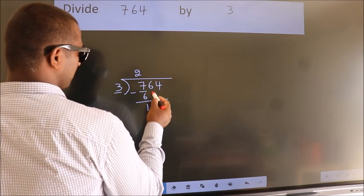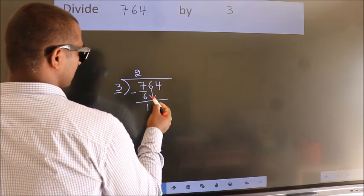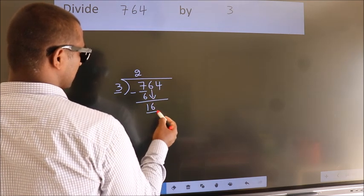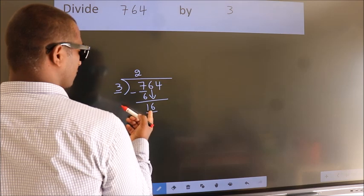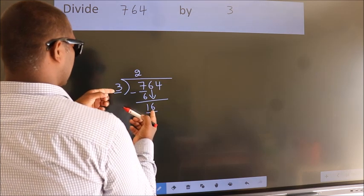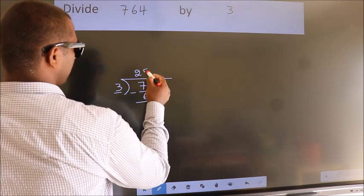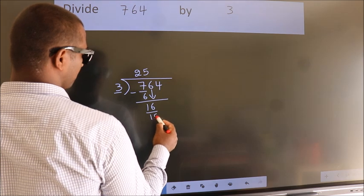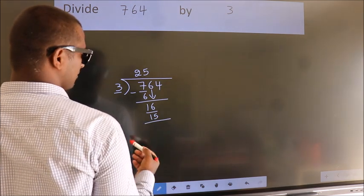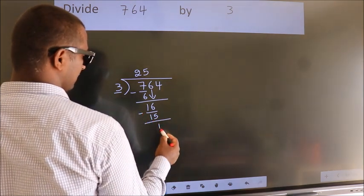After this, bring down the beside number. So 6 down. So 16. A number close to 16 in 3 table is 3 5's 15. Now we subtract. We get 1.